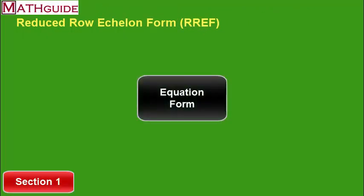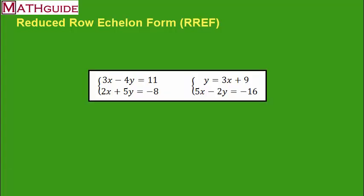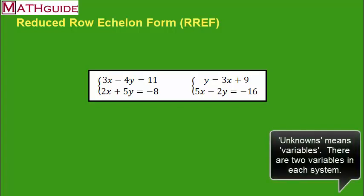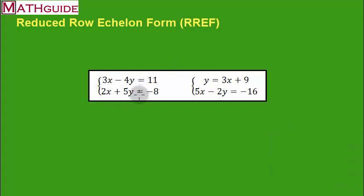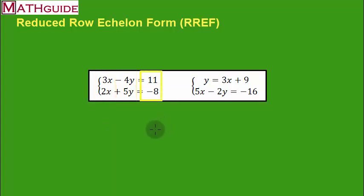We're going to talk about the form that the equations have to be in. Here we see two different systems of equations, both of which have two equations and two unknowns. For the first one, it's in a great form because the X's are in a column by themselves, Y's are in a column by themselves, you have an equal sign, and numbers all by themselves. Everything is nicely organized.